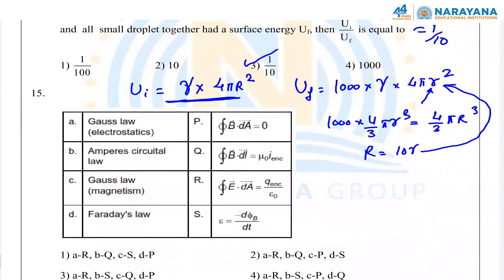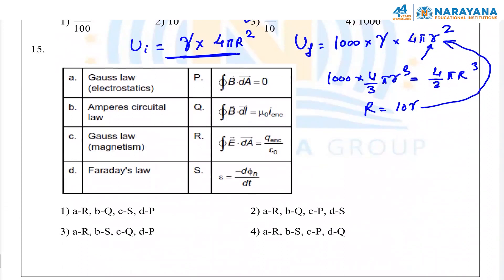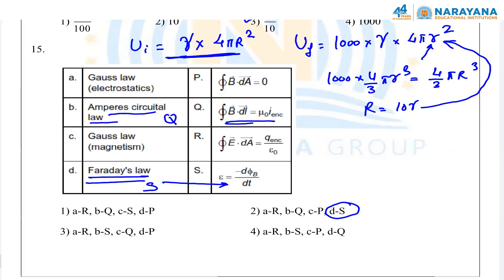Next question: matrix match type — laws to phenomena. Faraday's law relates to electromagnetic induction → S. Ampere's circuital law is about the line integral of magnetic field → Q. Gauss's law calculates surface integral of electric field equal to Q/ε₀ → R. Gauss's law in magnetism states the total magnetic flux is always zero → P. Answer is option 2.